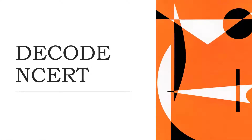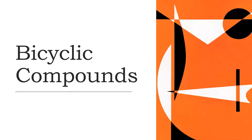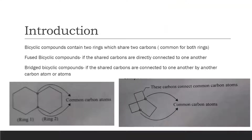Welcome to Decoval NCRT. Today we are going to be talking about bicyclic and spiro compounds. Bicyclic compounds are compounds that contain two rings which share two common carbon atoms, and these two carbon atoms are common for both the rings.